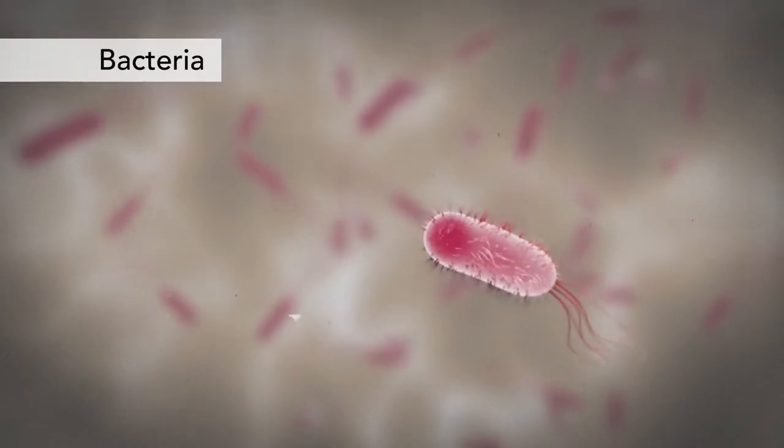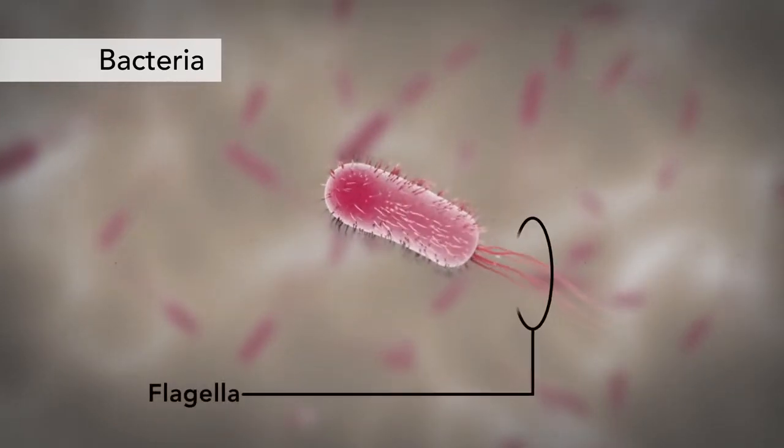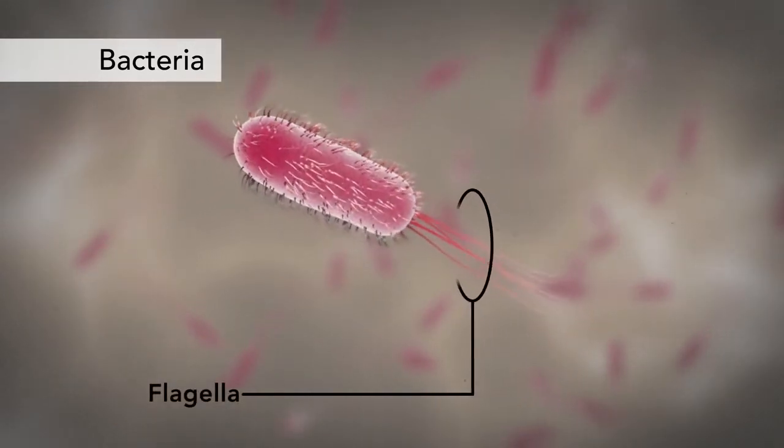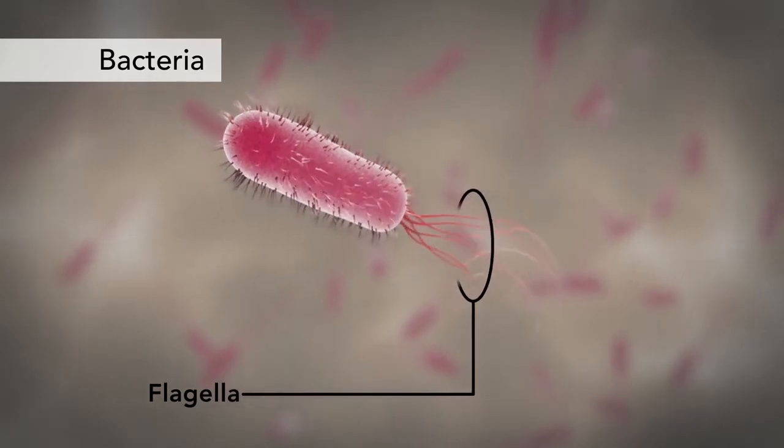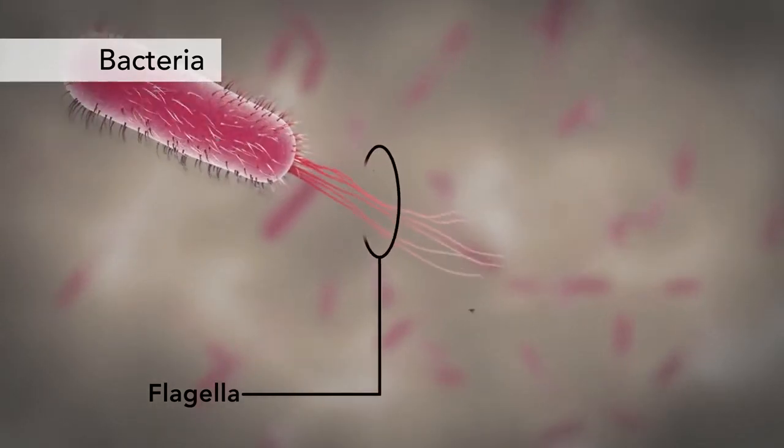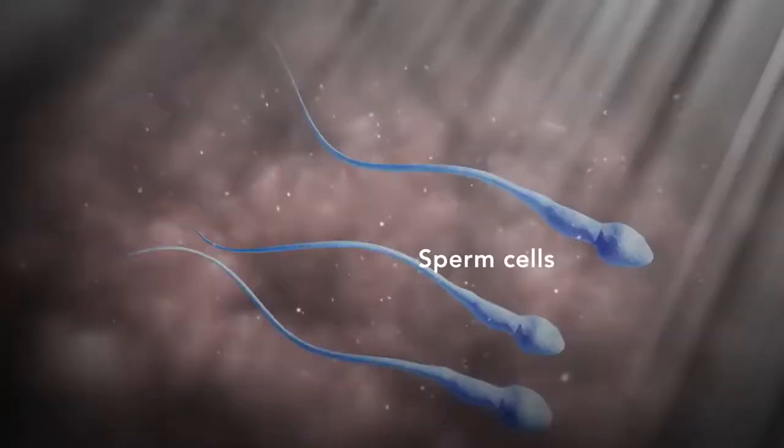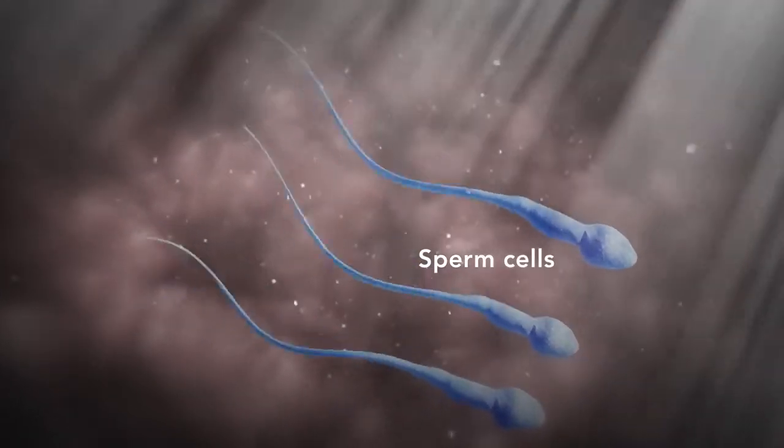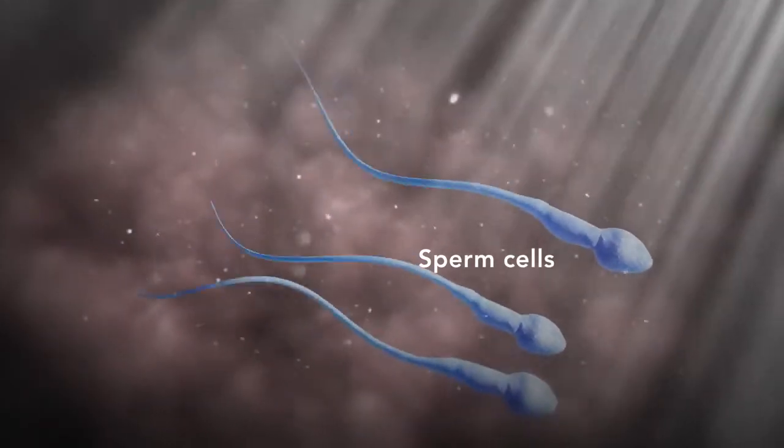Another unique feature in some cells is flagella. Some bacteria have flagella. A flagellum is like a little tail that can help a cell move or propel itself. The only human cell that has a flagellum is a sperm cell.